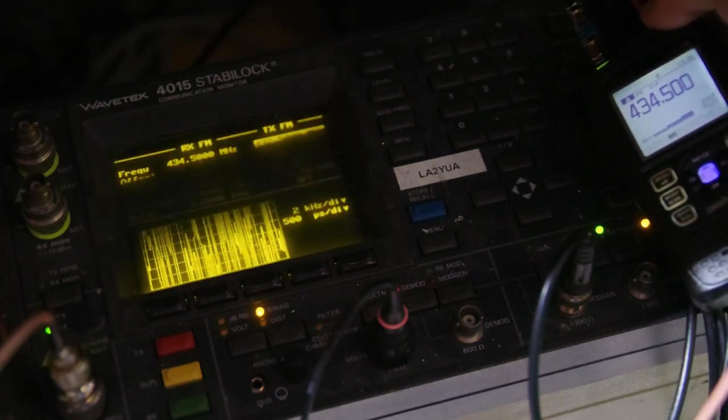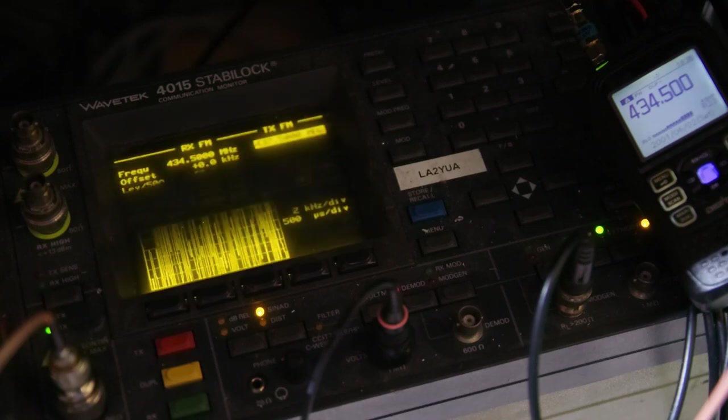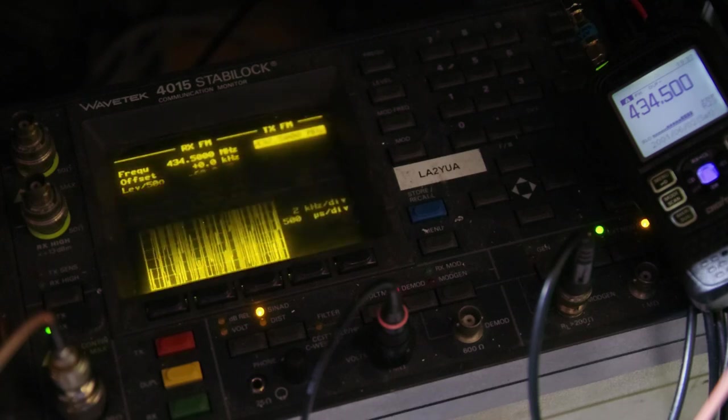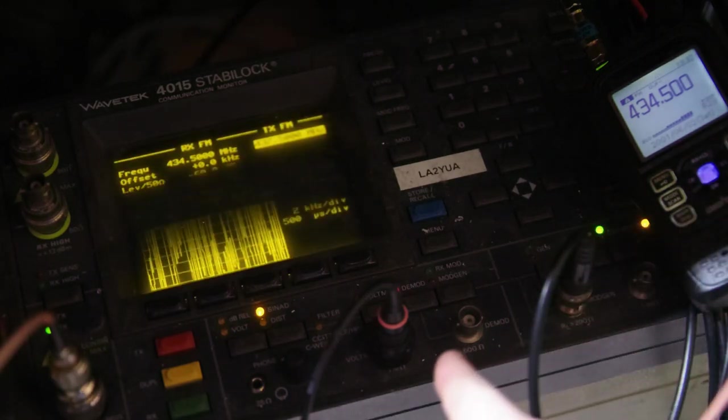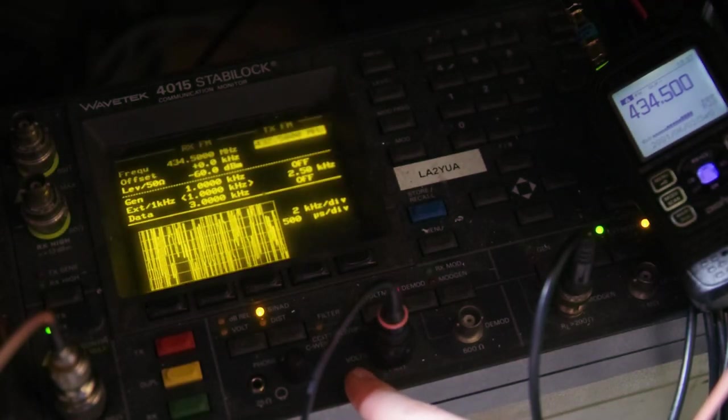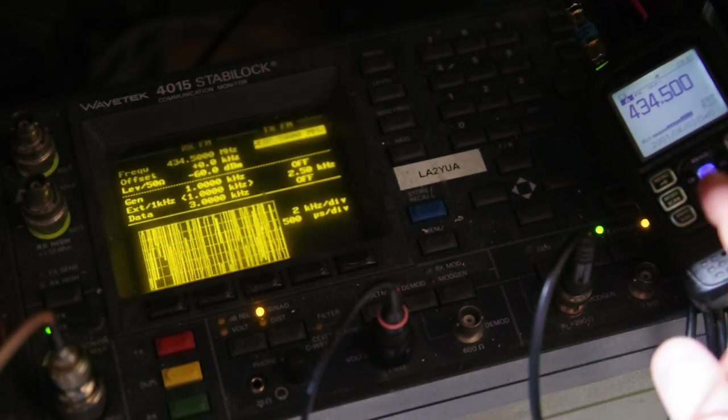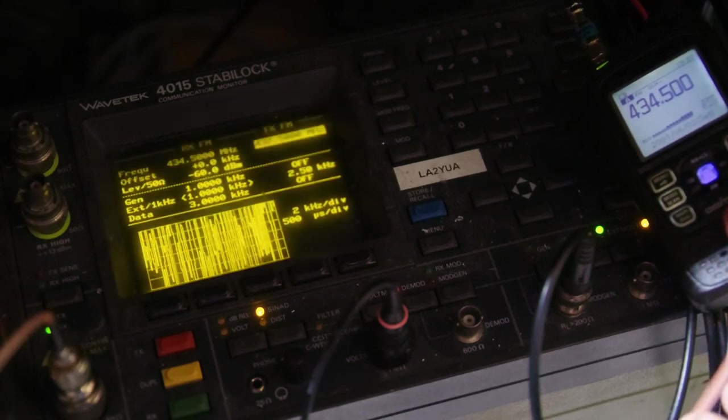What we're looking at here is fairly obvious if you're a ham radio guy and you've been paying attention to the channel for a while. What we've got here is a Stable Block 4015, a radio test set, and this is an ICOM ID51, a two-way ham radio.